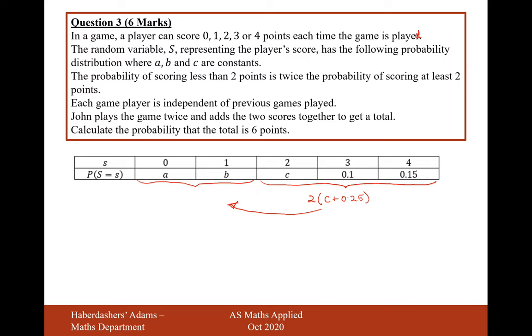Each game, the player is independent of previous games played. John plays the game twice and adds the scores together to get a total. Calculate the probability that this total is 6 points. Okay, so what I interpreted here from this sentence here...